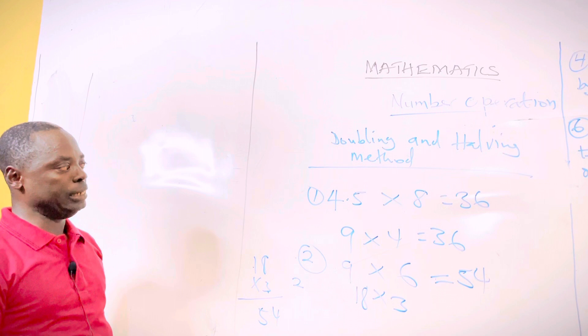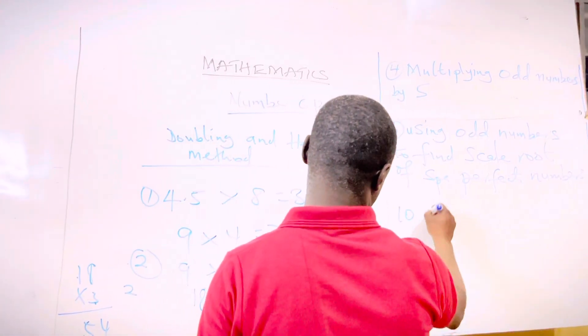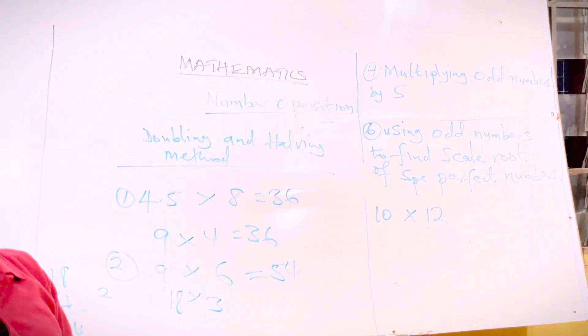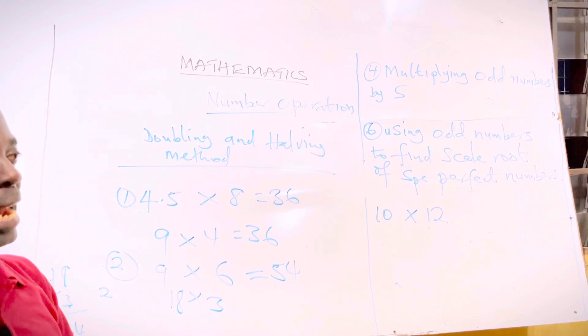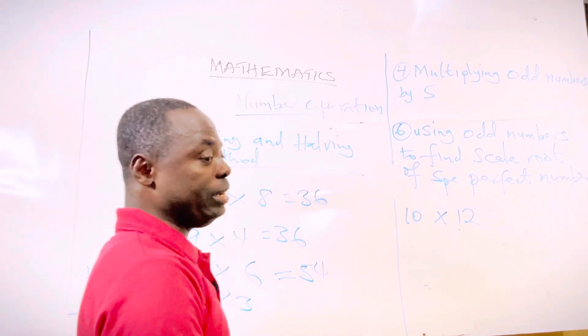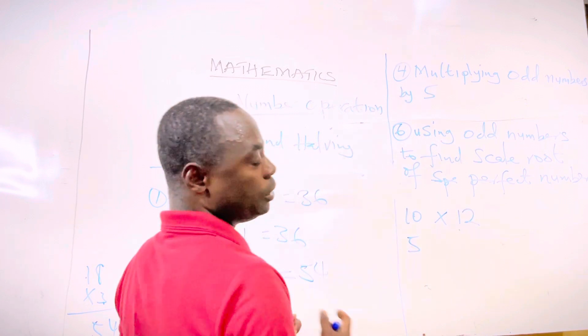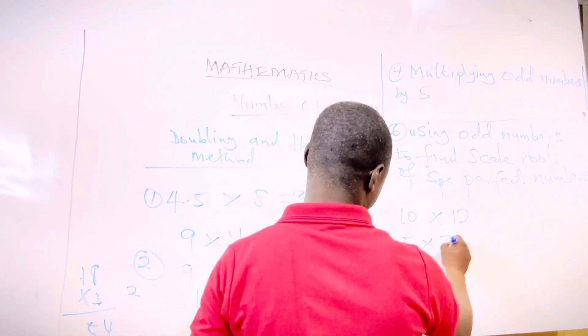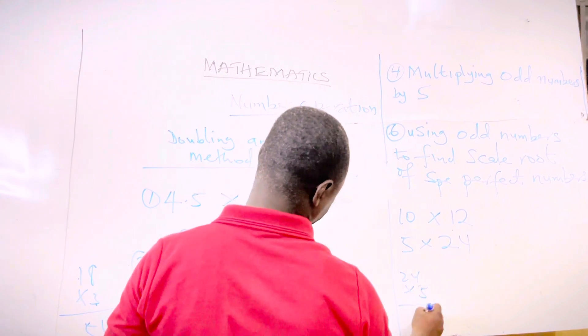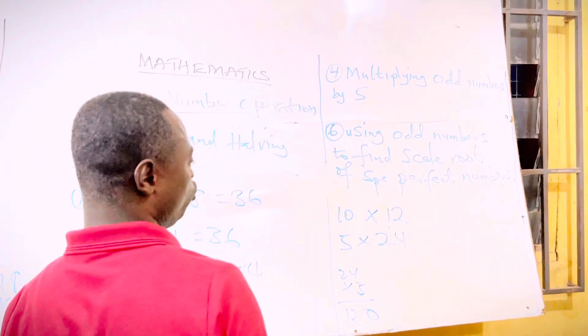You can multiply 10 times 12. You can double one and divide the other by two. If I multiply 10 by 2, that's 20. If I divide 12 by 2, that's 6. The number being in the chamber is 20 times 6 equals 120. So 10 times 12 equals 120.